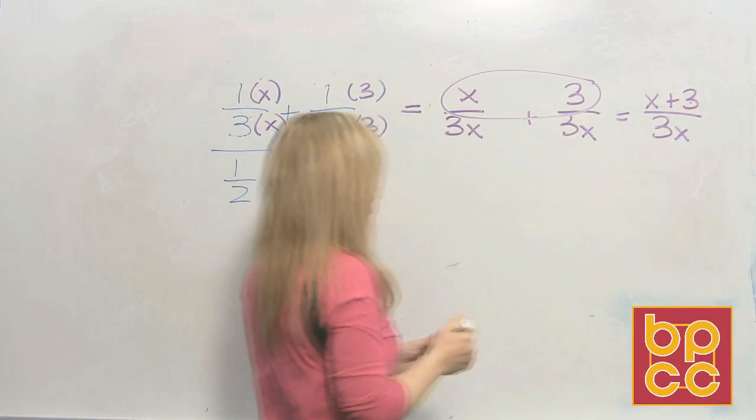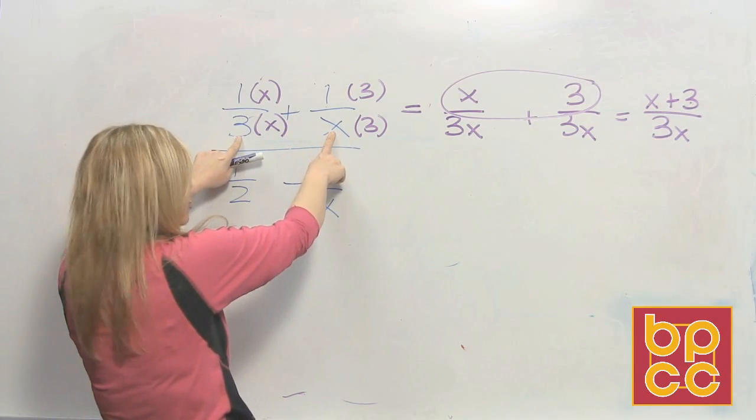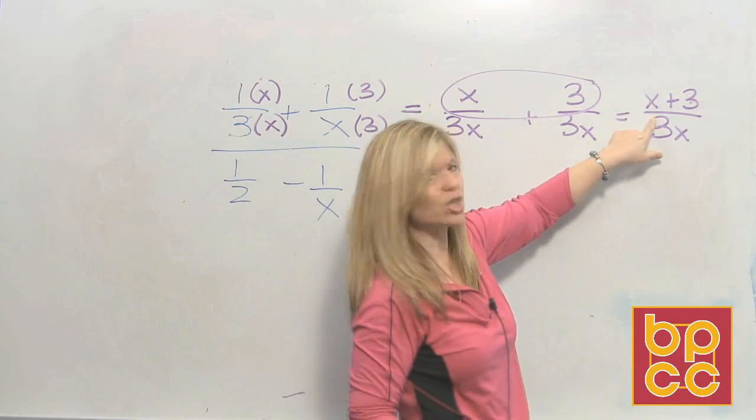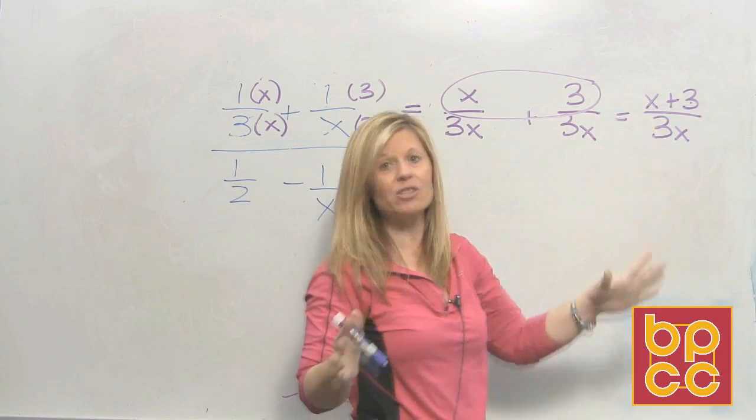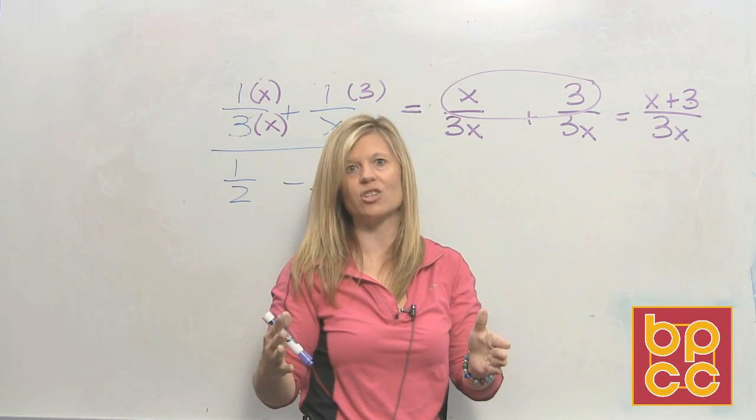Now I know what you're thinking. You didn't do anything. Yes, you did. You went from having two separate fractions, two fraction bars, to having one fraction, one fraction bar. And that's the rule. You've got to have one fraction in the numerator and one fraction in the denominator to divide.